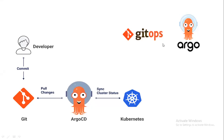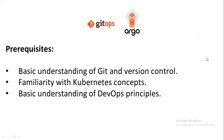Hello guys, in this session we are going to learn GitOps — an introduction to GitOps. As you can see in the architecture, there is a developer who commits to Git, then pulls changes to Argo CD, and then to Kubernetes.